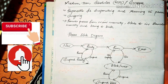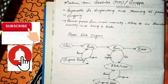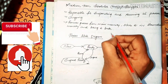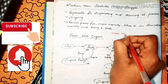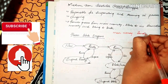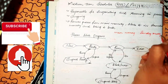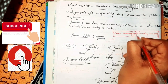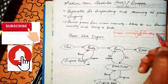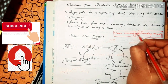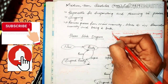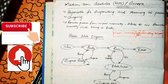A process is removed from main memory and moved to secondary memory. This operation is called swapping. The medium-term scheduler handles this swapping between main memory and secondary memory.